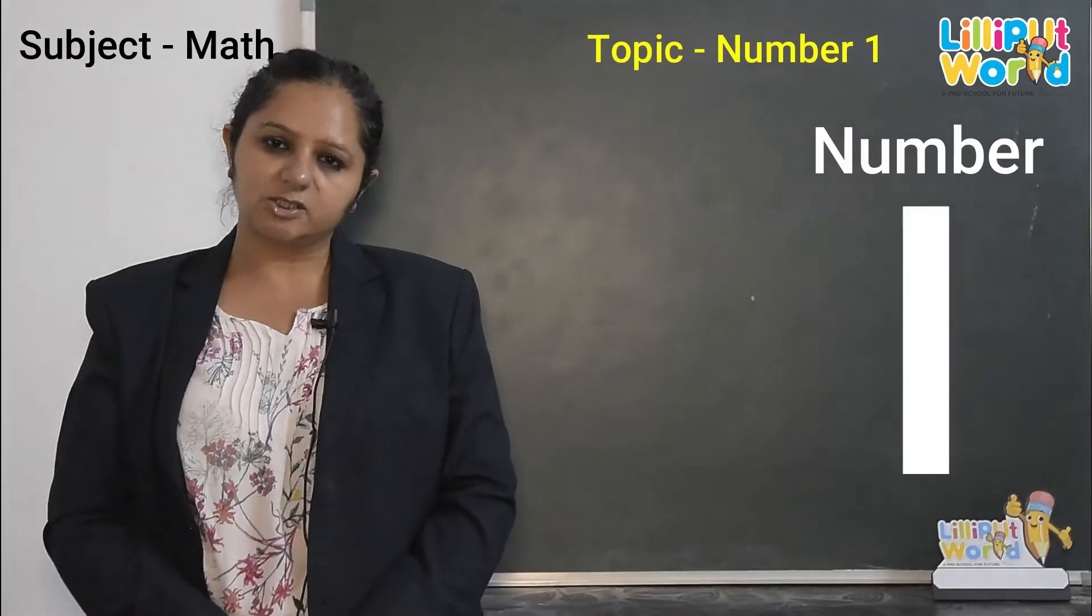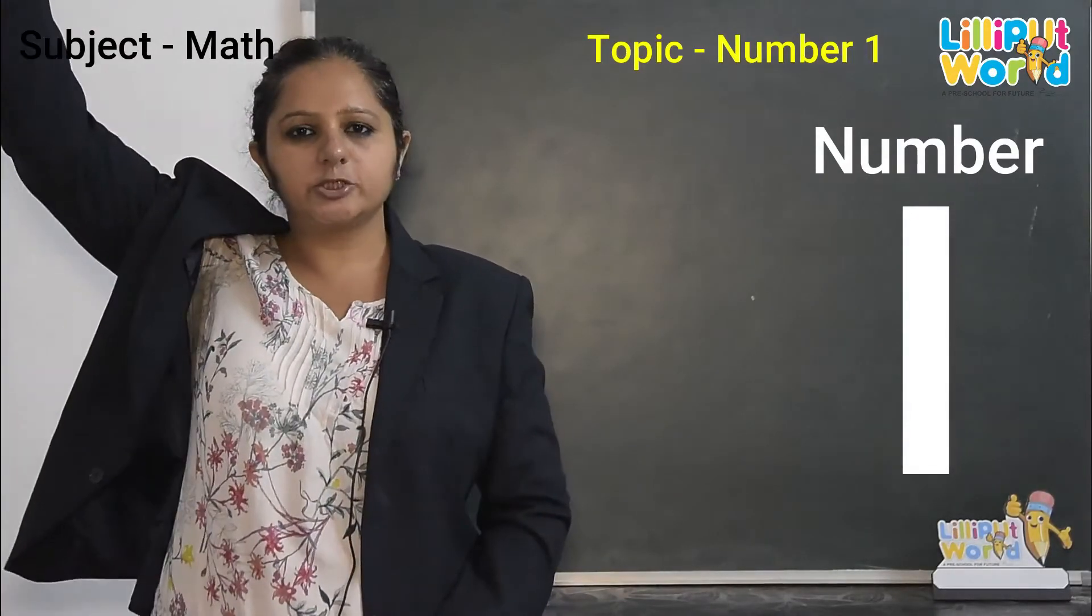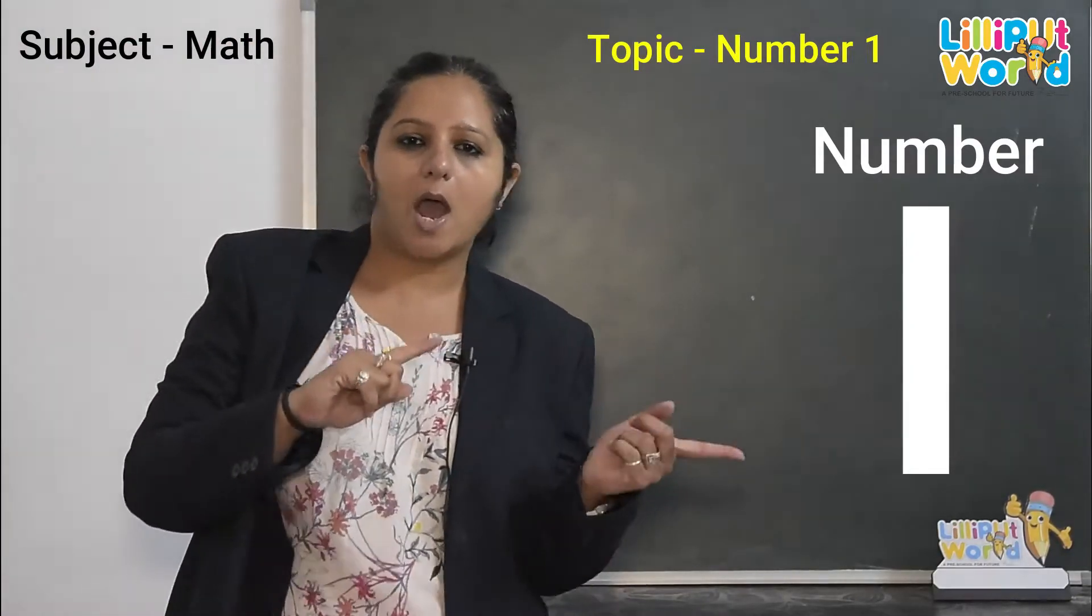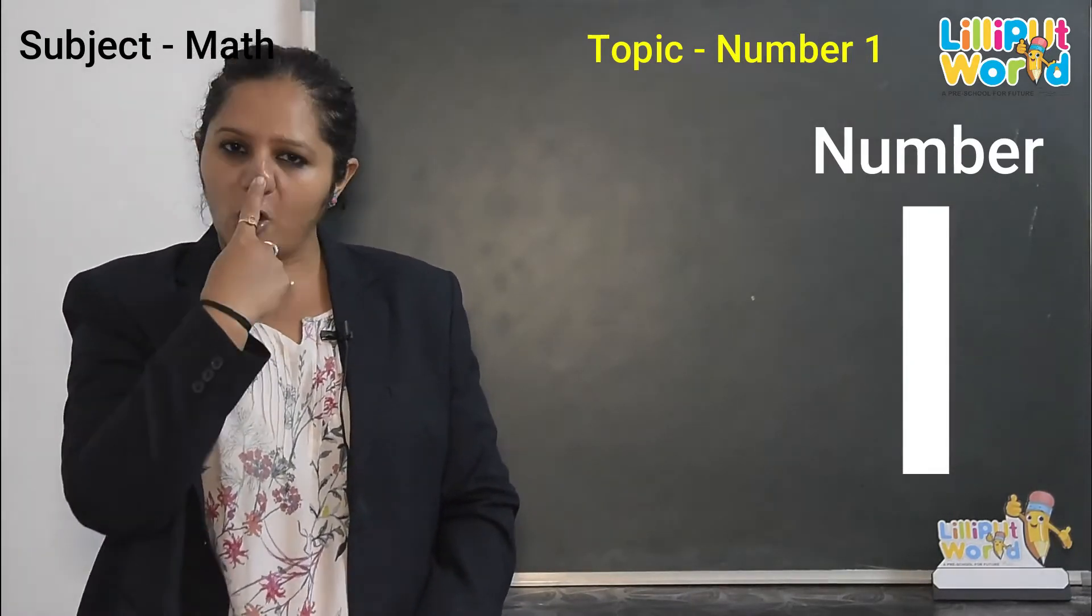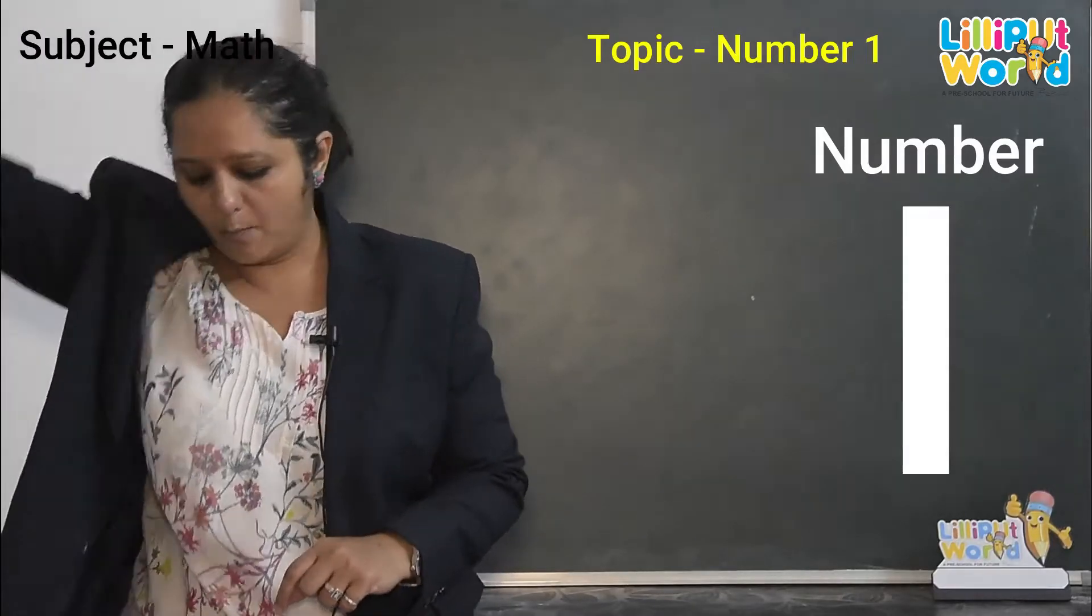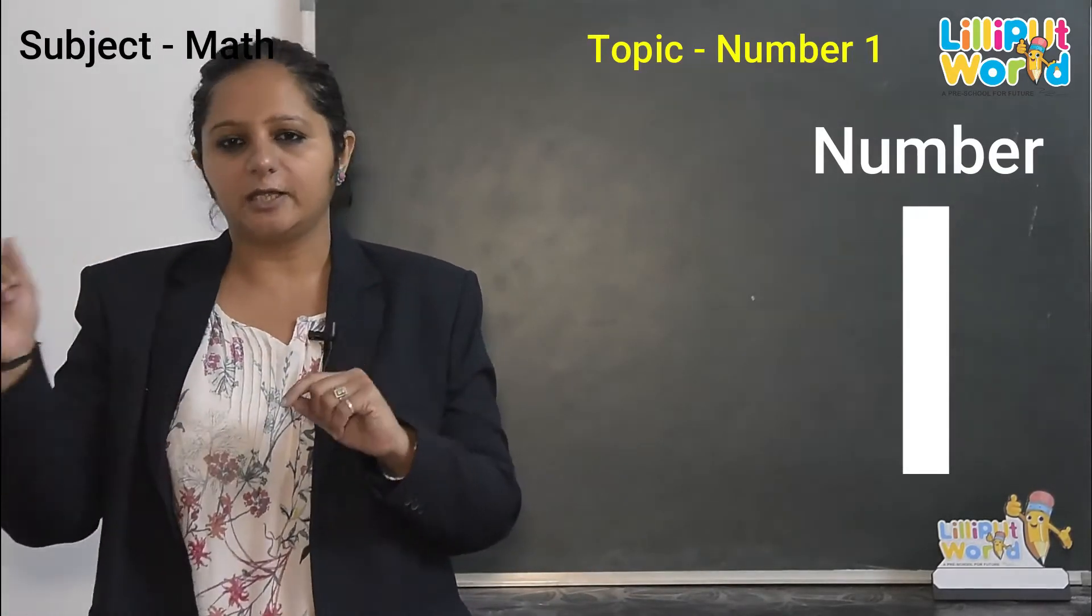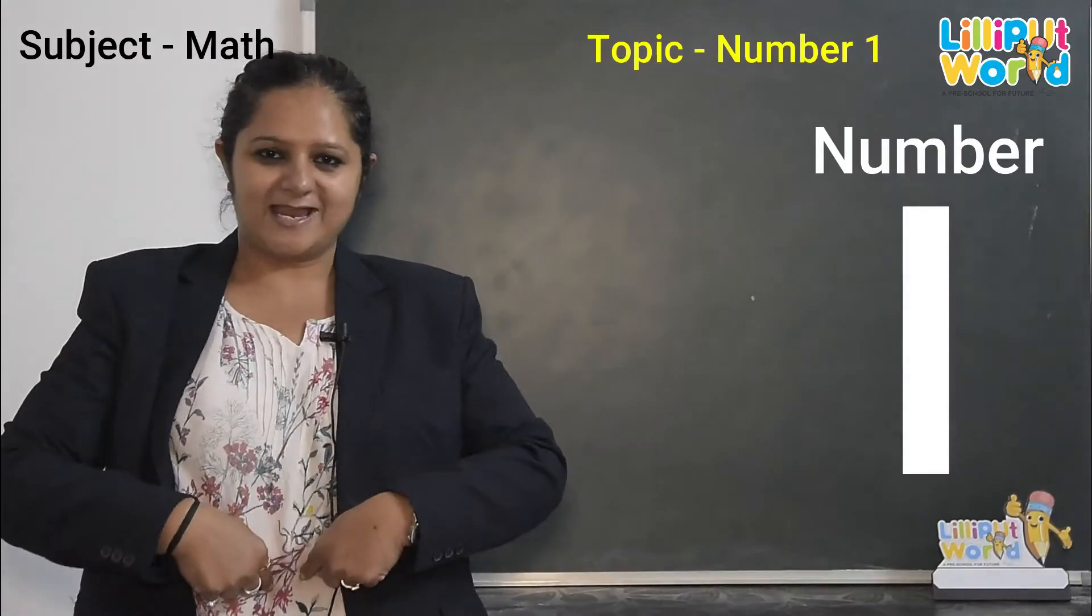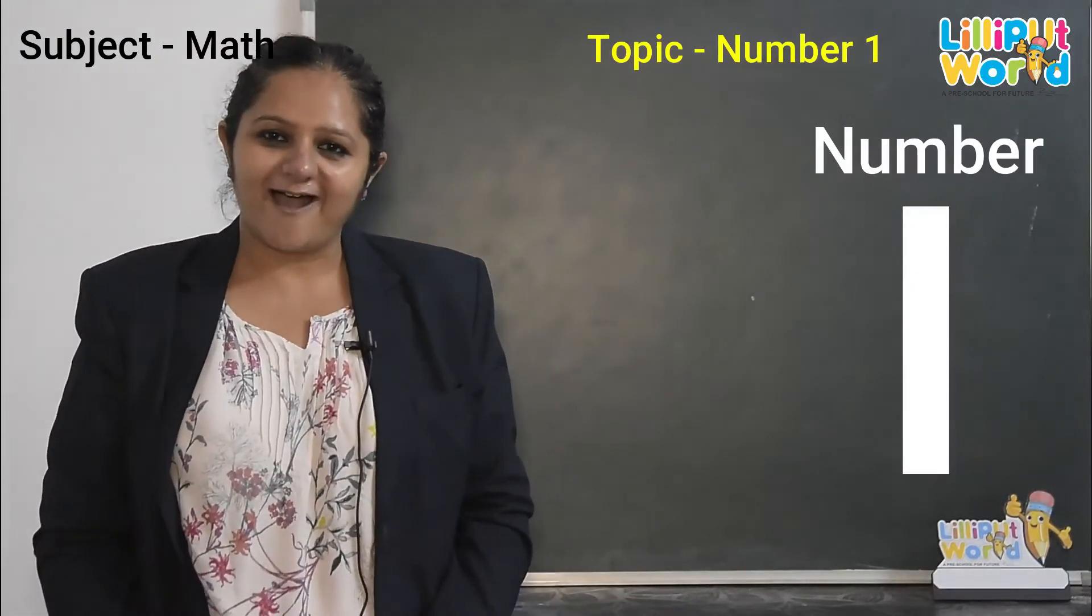Now can we sing a nice song for number 1? Let's do. 1 little finger, 1 little finger, 1 little finger, tap, tap, tap. Point to the top, point to the down, and it's on your head. Head. 1 little finger, 1 little finger, 1 little finger, tap, tap, tap. Point to the top, point to the down, and it's on your nose. Nose. 1 little finger, 1 little finger, 1 little finger, tap, tap, tap. Point to the top, point to the down, and it's on your chin. Chin. 1 little finger, 1 little finger, 1 little finger, tap, tap, tap. Point to the top, point to the down, and it's on your tummy. Tummy. So one tummy, one chin, one nose, one head, and one tongue. Very good.